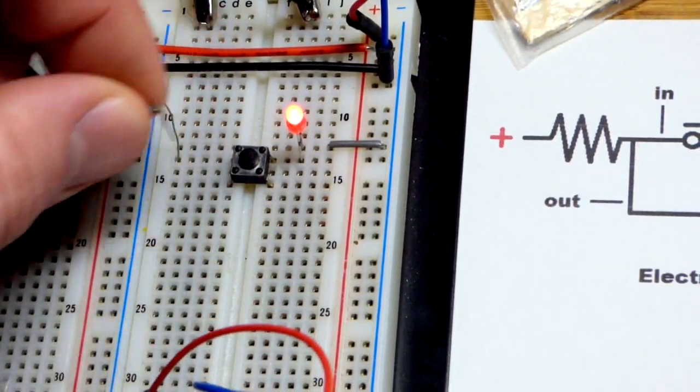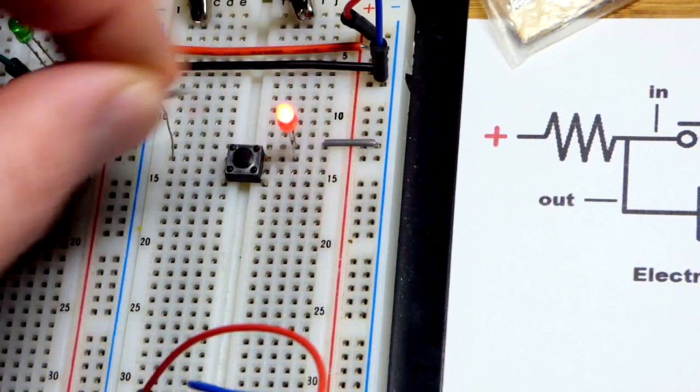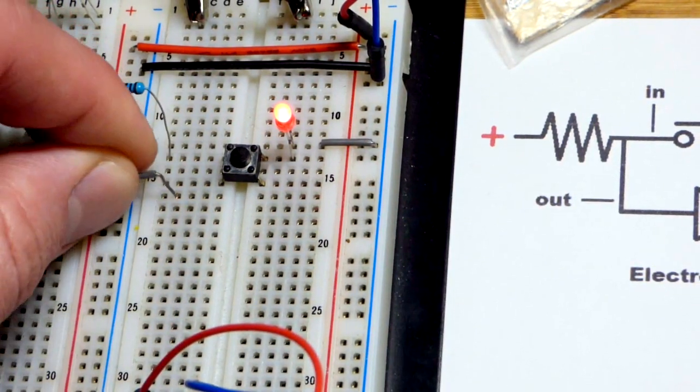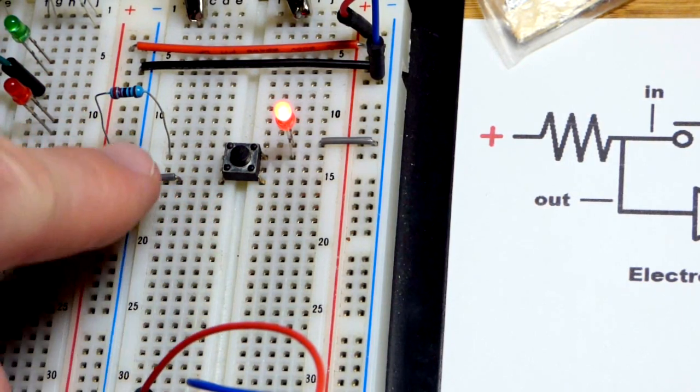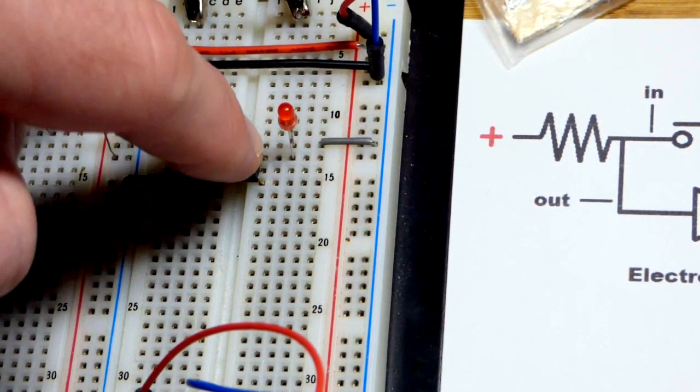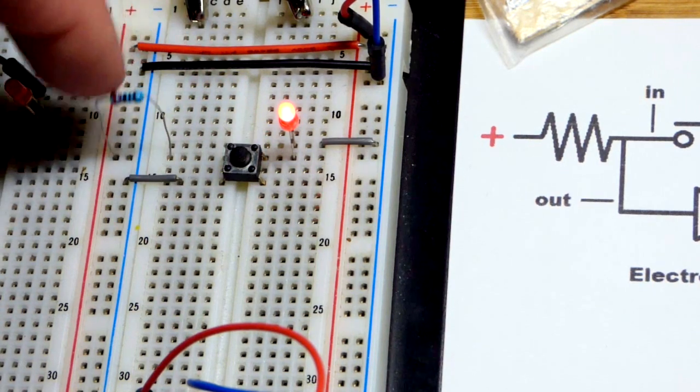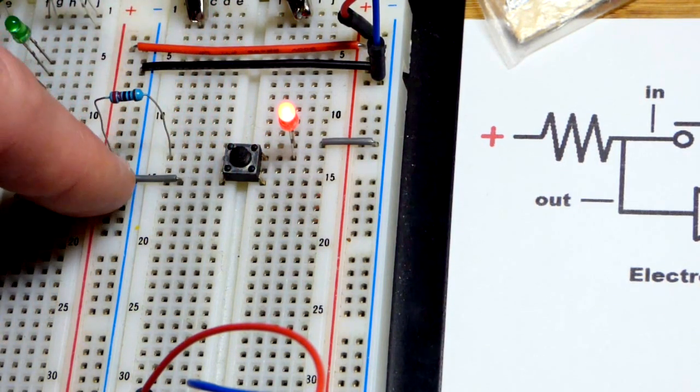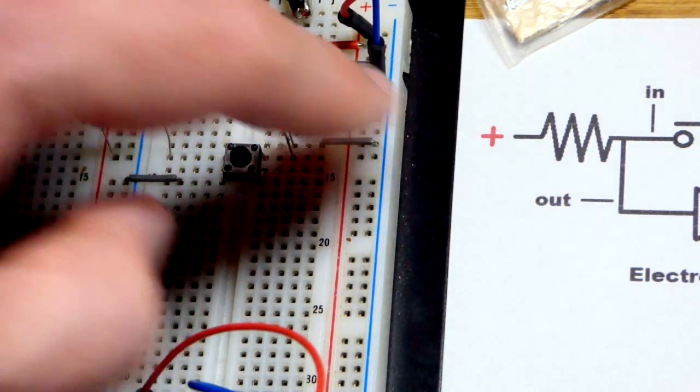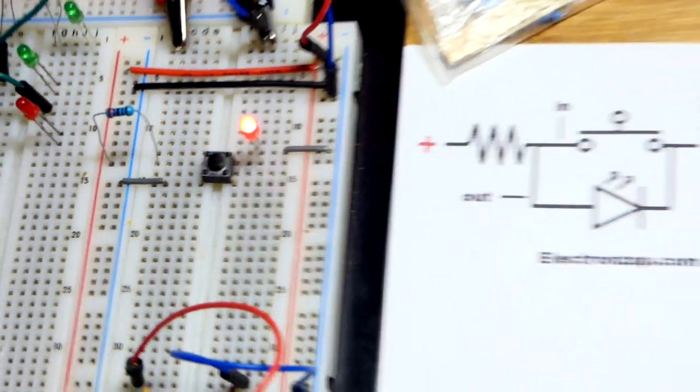So I'm going to take this jumper here. Doesn't matter. I can put it on that side or on this side. As I said before, those two bottom pins are connected all the time. Now if I hit the button, you can see the LED turns off. So what it's doing, it's diverting the current through the resistor and then to ground instead of going through the LED and then to ground the negative rail.